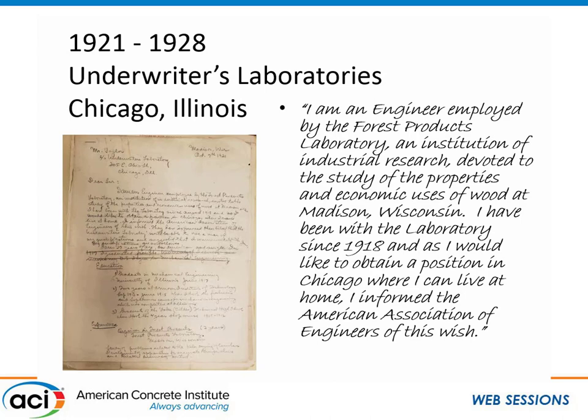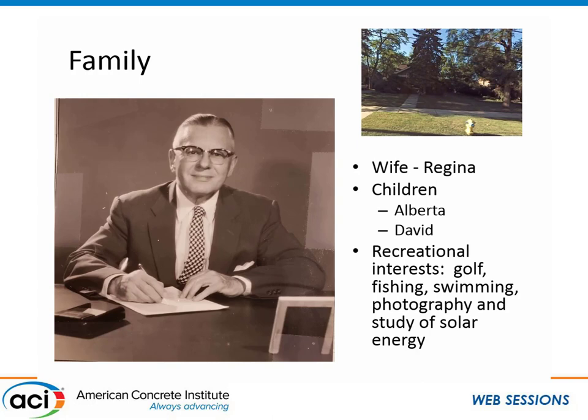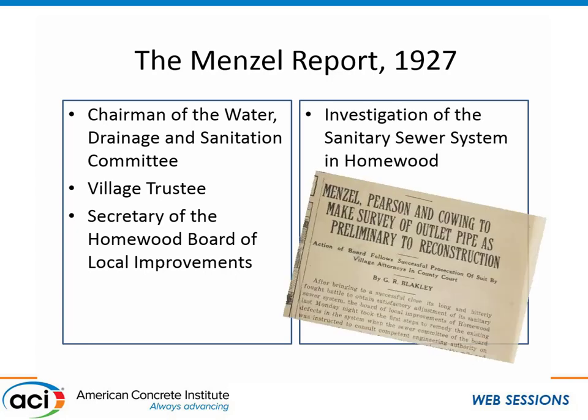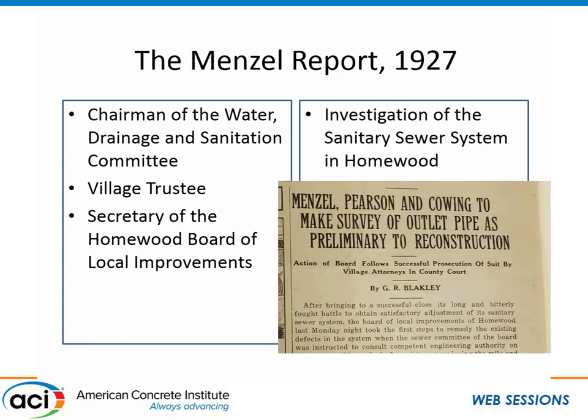That got me thinking — what kind of family did Carl have? In 1923, he married his wife Regina, and they ended up having two children, Alberta and David. On the personal side, he liked to golf, fish, and swim. He liked photography and, what I found really interesting, the study of solar energy. He was also very involved with his community — involved in his church, he was a Mason, and he ended up being chairman of the Water Drainage and Sanitation Committee in his hometown of Homewood, Illinois. He was a village trustee and secretary of the Homewood Board of Local Improvements.